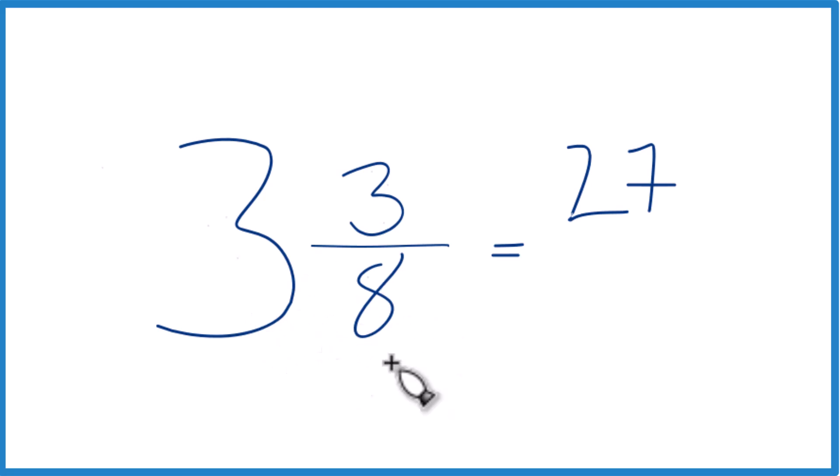And then we just bring this denominator here across, the 8, and this is the improper fraction for 3 and 3 eighths. It's improper because the numerator here, that's larger than the denominator.